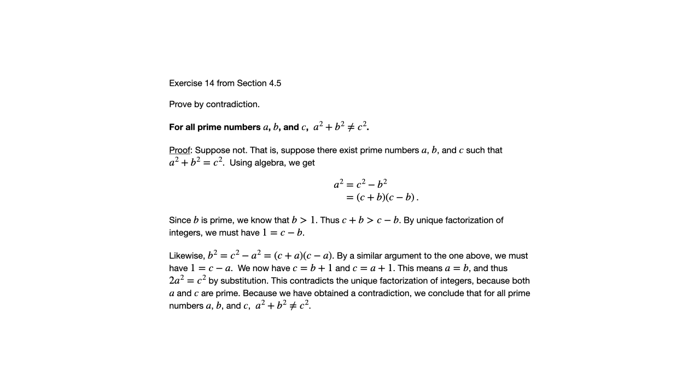And so substituting into a squared plus b squared equals c squared, we have two a squared equals c squared. I know this, you may want to sort of read through this two or three times because there's a lot going on here. But what we were able to do here is say that two a squared equals c squared. Now unique factorization of the integers comes up again because both sides of that equation must have the same prime factors.